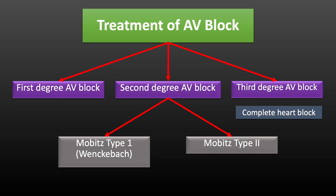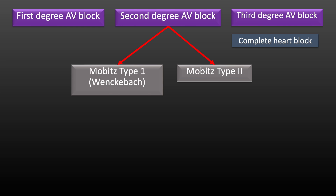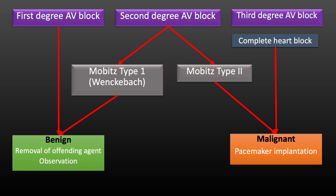Now we will briefly understand what is to be done when you have detected AV block in an electrocardiogram. 1st degree AV block and Mobitz type 1 block are benign conditions and don't require pacemaker implantation. We have to identify any reversible cause, treat that cause, and monitor the patient for progression of AV block. Mobitz type 2 block and complete heart block generally require pacemaker implantation as these are considered malignant conditions, which can lead to symptoms such as giddiness, syncope, or sudden cardiac arrest due to low heart rate.